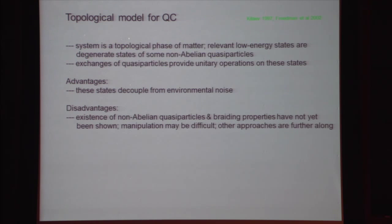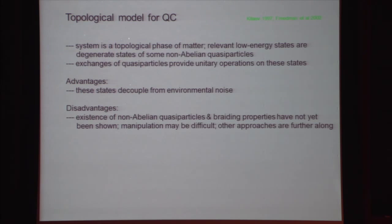Speaking of gates, the extra Gaussian contributes only phases, and those phases are path dependent — so that part is not topological or protected. But it doesn't matter: in the non-abelian case, all the states get the same extra phase. So you talk about unitary operations modulo the phase factors, not just as matrices.